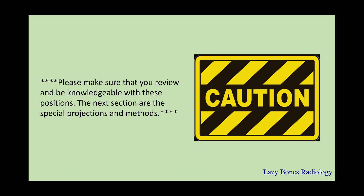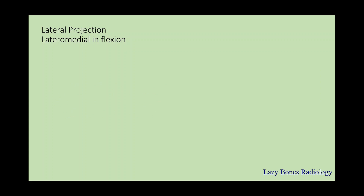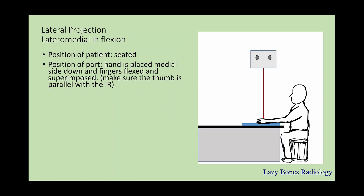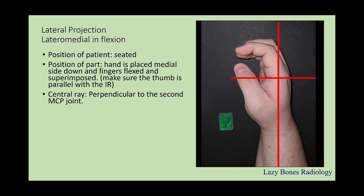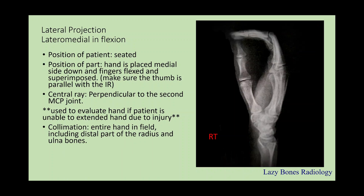The next section is going to be special projections and methods. Lateral projection — lateralmedial, with flexion. Patient seated. The position of the hand is placed with the medial side down, fingers are flexed and superimposed. Make sure the thumb is parallel with the IR, as you can see here. The central ray is perpendicular to the 2nd MCP joint. This is used to evaluate the hand if the patient is unable to extend the hand due to injury. Make sure to collimate the entire hand including the distal part of the radius and ulna. SID is 40 inches. Make sure to label correctly.